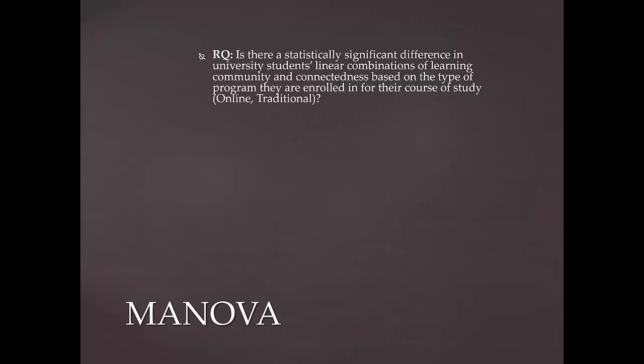Let's take a moment and talk about the independent and dependent variables, or the variables that we'll be analyzing. First of all, remember for a one-way MANOVA we need to have one, at least one, categorical independent variable. In this case, the independent variable is type of program, and there are two levels or two groups.